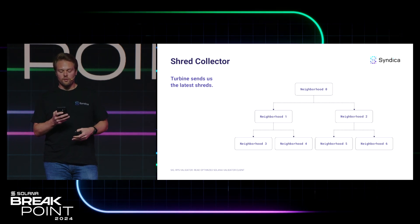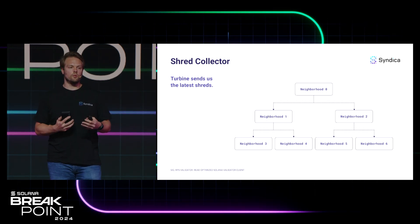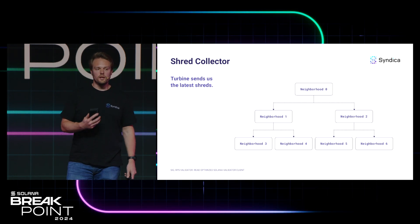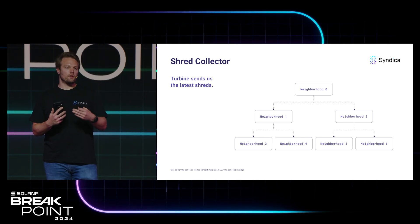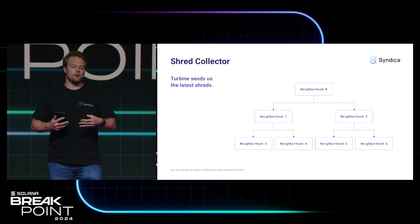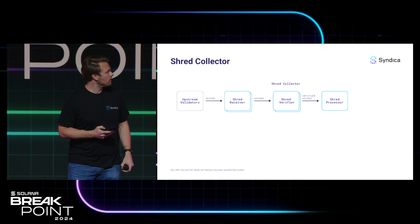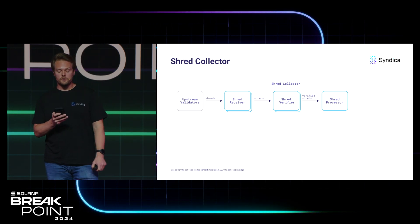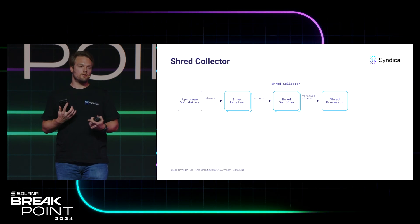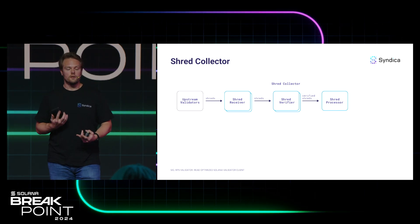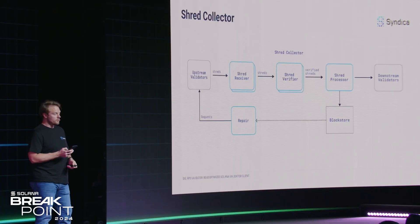Turbine is the mechanism by which the Solana network distributes shreds throughout the entire cluster. The leader produces shreds, sends them to its neighbors, who send them to their neighbors, and so on in a tree-like structure until the entire network has every shred. The ShredCollector's responsibilities include receiving all shreds over Turbine, verifying the signatures of those shreds, and inserting them into the BlockStore. Meanwhile, the repair service runs continuously, checking the BlockStore for any missing shreds that could not be recovered and sending out requests to get them, then retransmitting over Turbine.